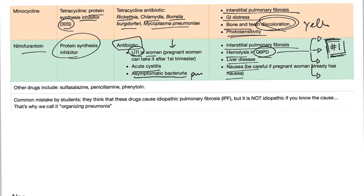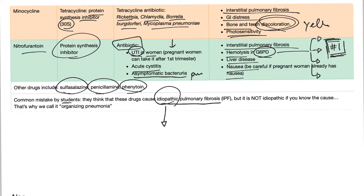There are some other drugs that cause pulmonary fibrosis, such as sulfasalazine, penicillamine, and phenytoin. A very common mistake by students is saying that bleomycin, amiodarone, nitrofurantoin, etc. cause idiopathic pulmonary fibrosis — that's wrong. If it's called idiopathic, we do not know the cause. So don't say these drugs cause idiopathic fibrosis; if they cause it, it's not idiopathic. Just say interstitial pulmonary fibrosis, or at least say organizing pneumonia.